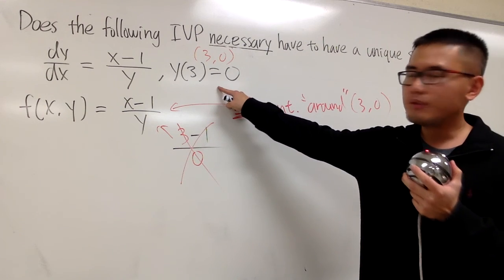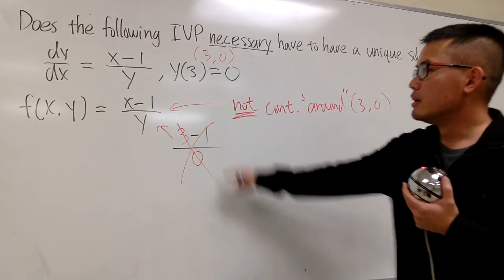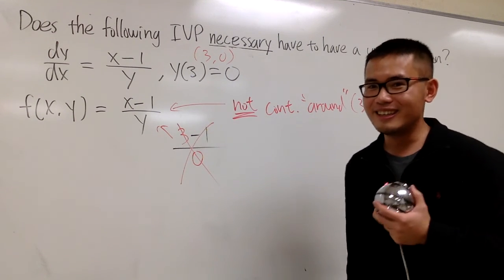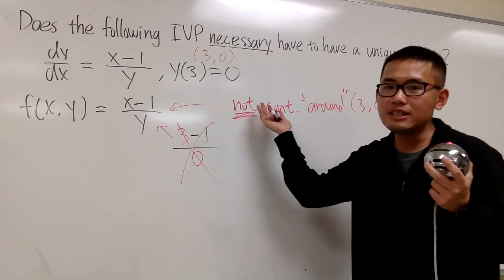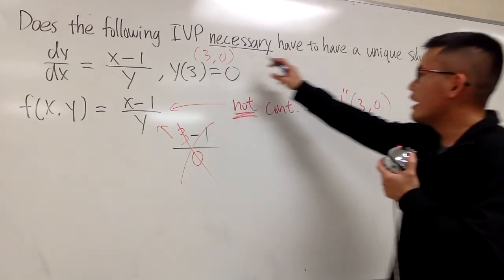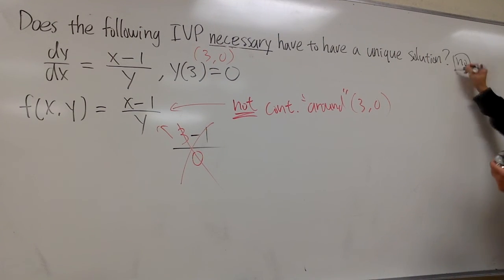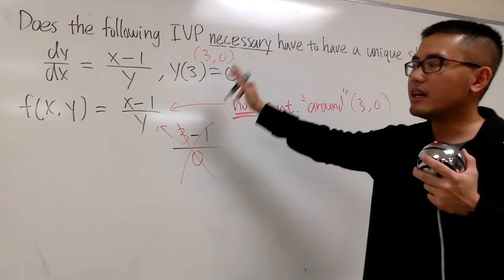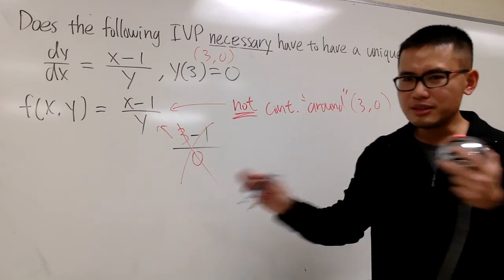Does this have to have two answers? I cannot be sure. Can I say this has no solution? No, I cannot say that either. In fact, I don't know how many solutions we have right here. The best thing to do is just go ahead and solve. But I cannot promise anything — I cannot say this has a unique solution, I cannot say it has two answers, I cannot say it has no solution.